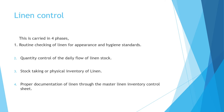The second point is quantity control of the daily flow of linen stock — monitoring where linen is going and how much is coming back from the floors. The third point is stock taking or physical inventory of linen. Once every 15 days or once a month, all GRAs and supervisors take physical stock of linen in the rooms, linen room, laundry, and pantry; totalling all of these is called stock taking, giving a complete figure of linen existing in the housekeeping department.